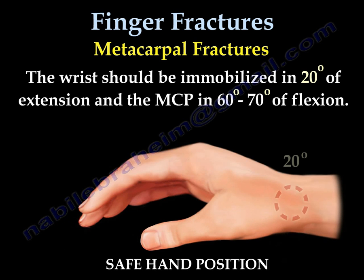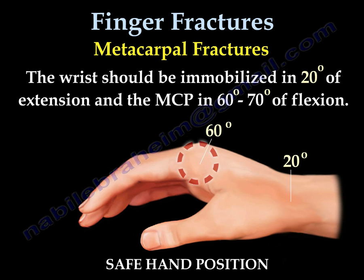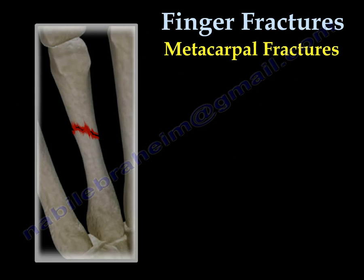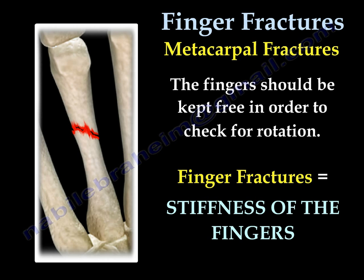Metacarpal fractures: the wrist should be immobilized in 20 degrees of extension, and the MCP in 60 to 70 degrees of flexion. The fingers should be free in order to check for rotation. Finger fractures carry a risk of stiffness — be aware of rotation and stiffness of the fingers.